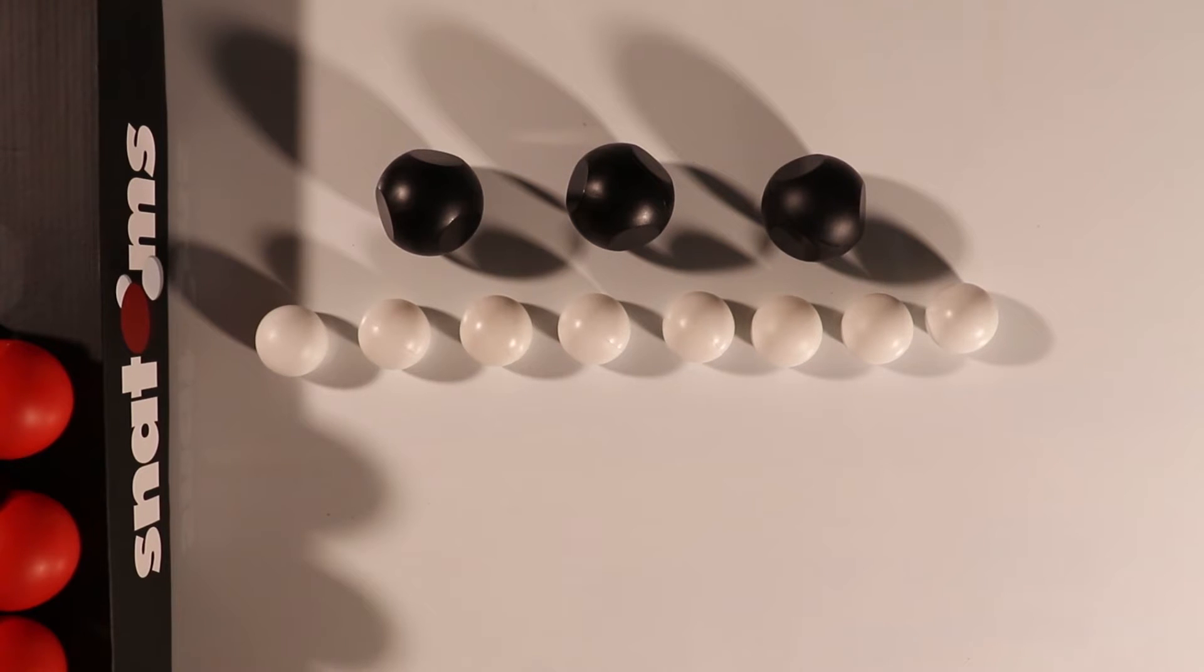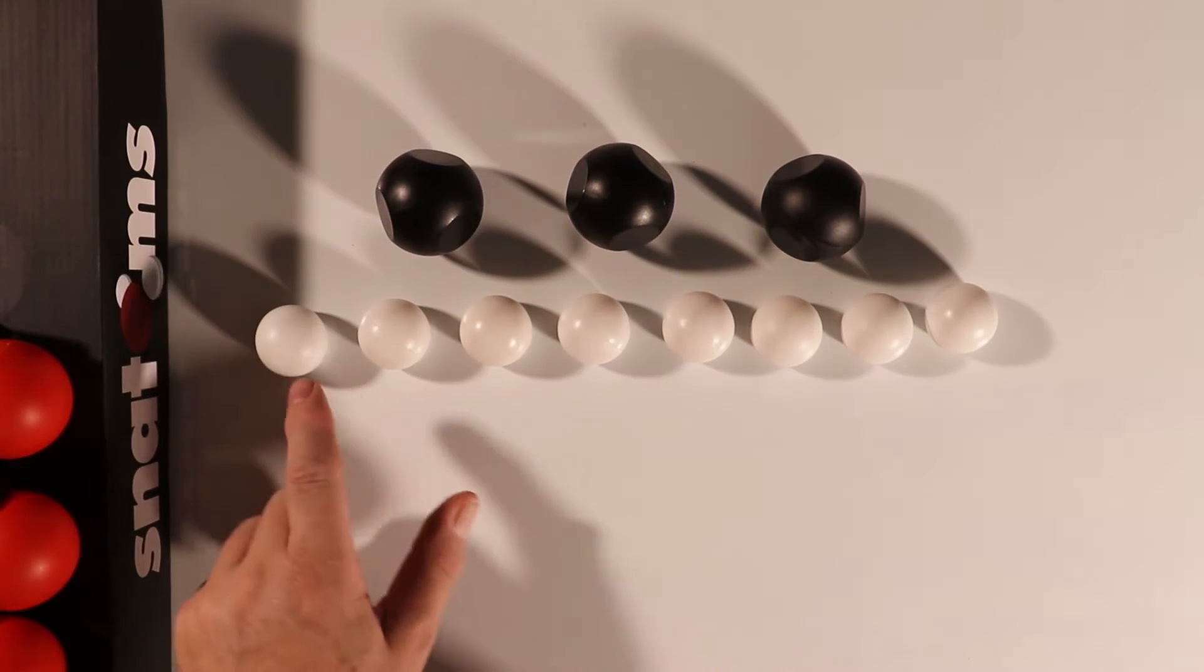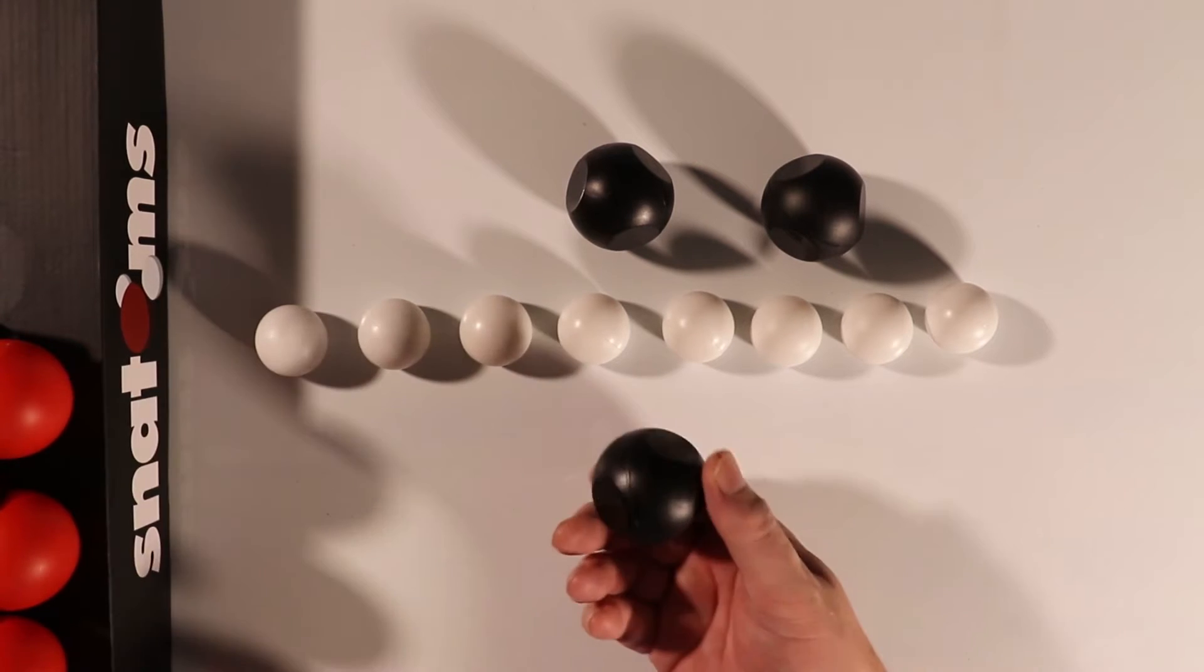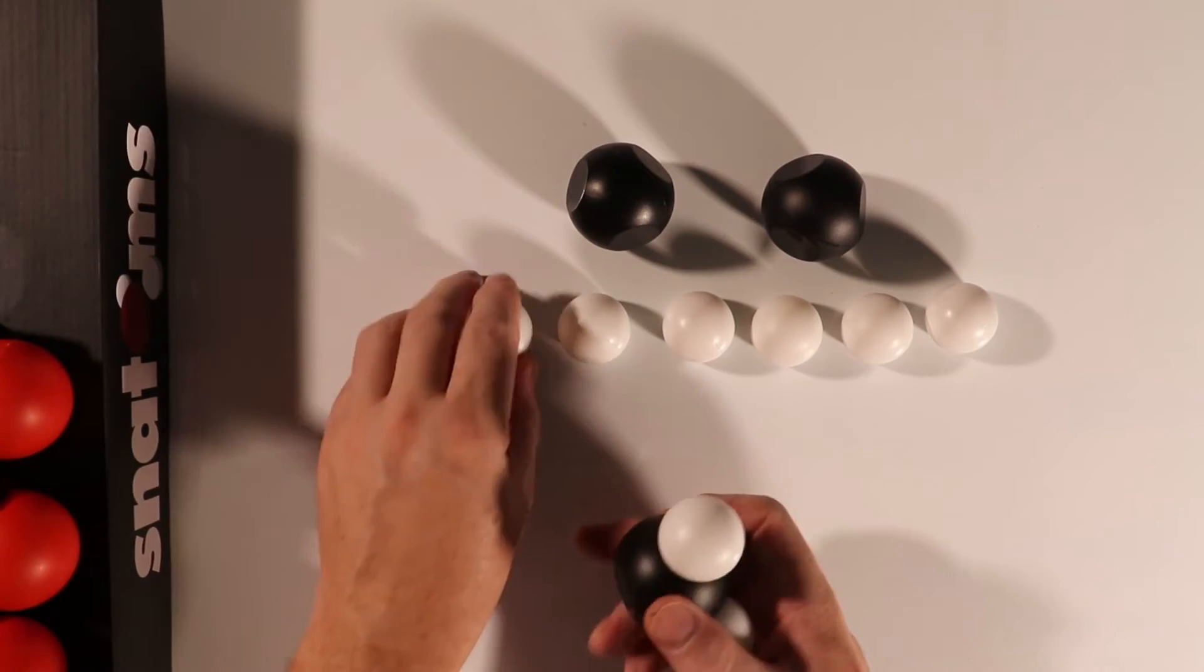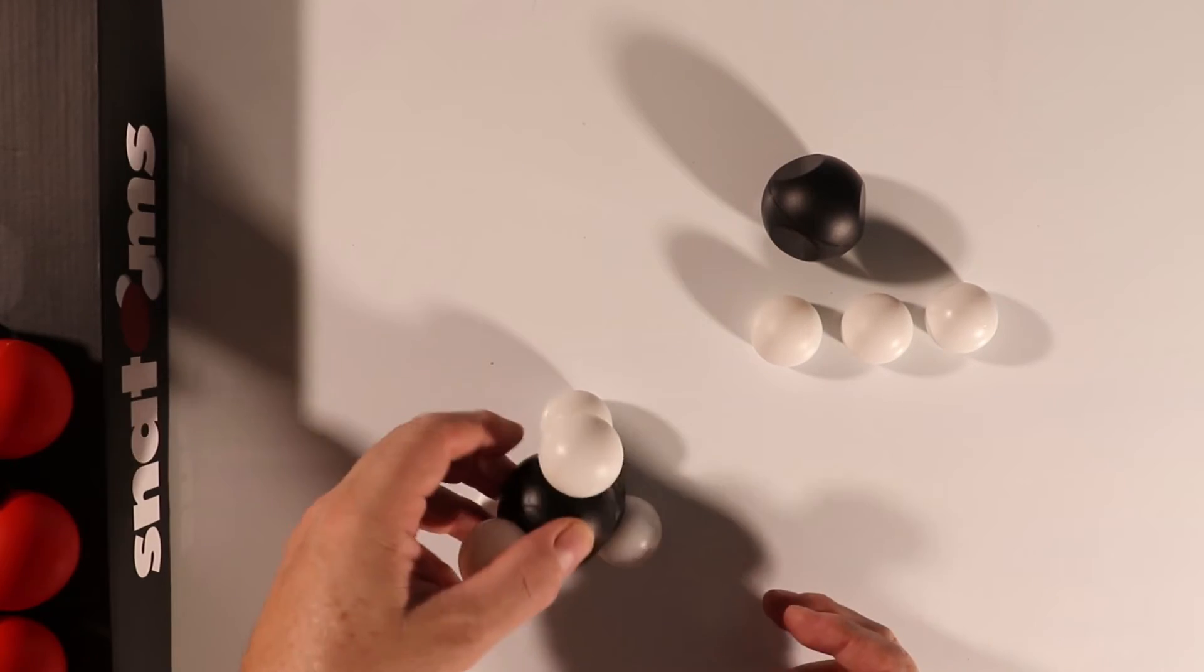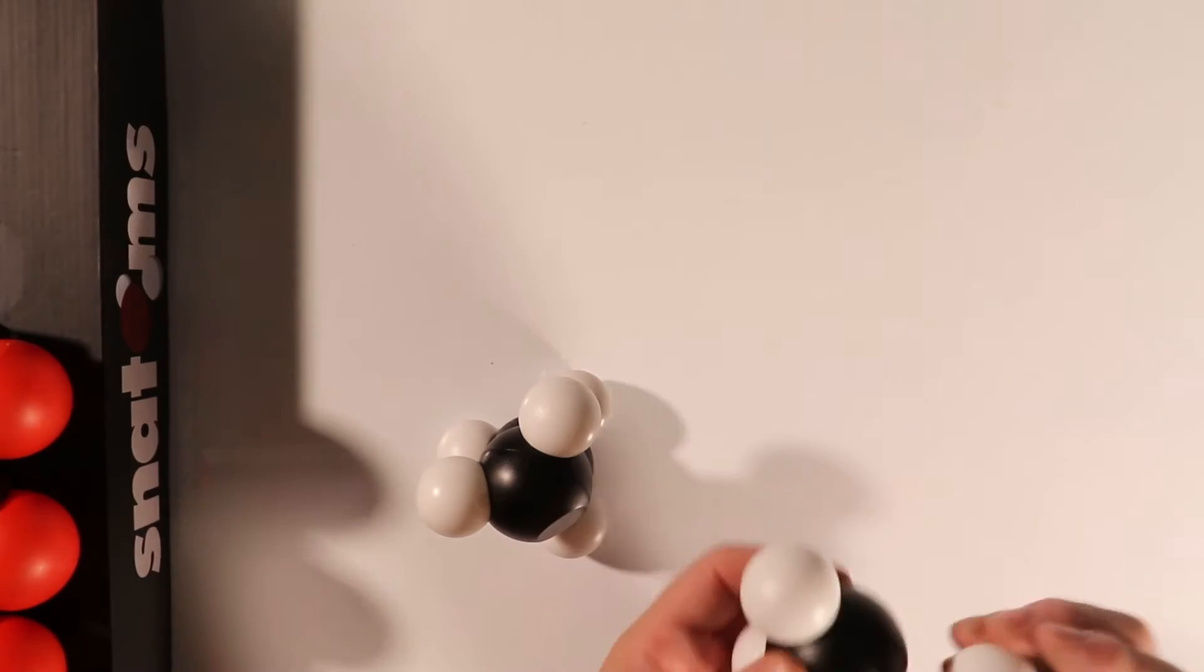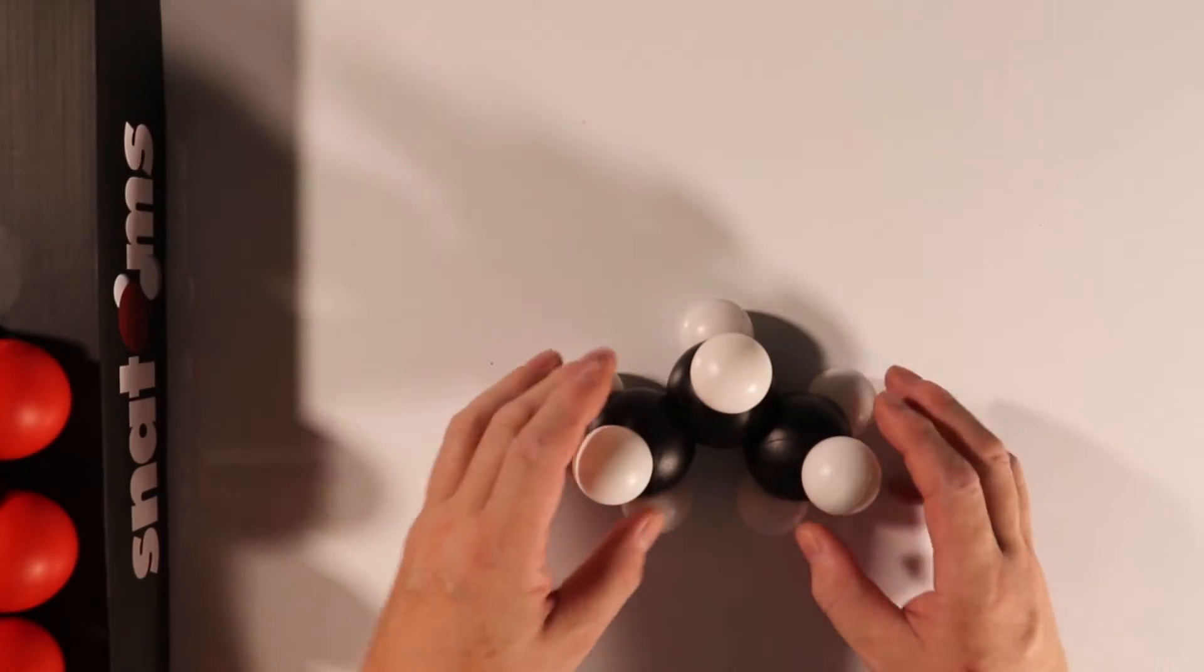Propane is a gas that consists of three carbon atoms and eight hydrogen atoms. Each carbon atom has four bonds and each hydrogen atom has one bond. They combine together to look something like this.